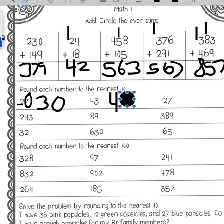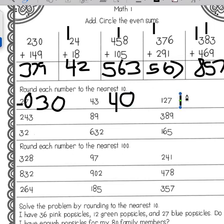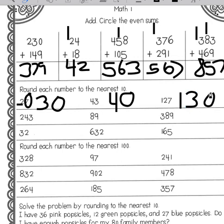Here we have 127. The two is in the tens place, so we need to look at the digit to the right which is a seven. Because this is greater than five, we're going to round up. The one stays the same, the two becomes a three, and the seven becomes a zero.